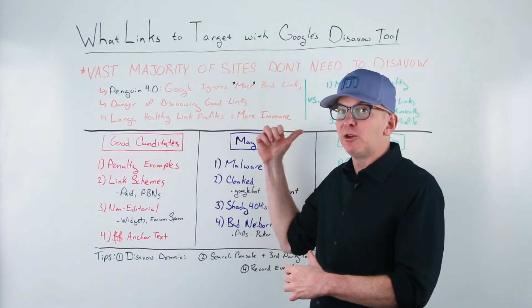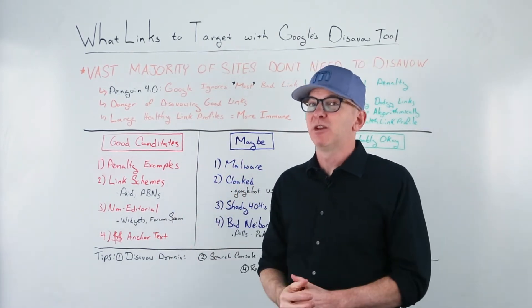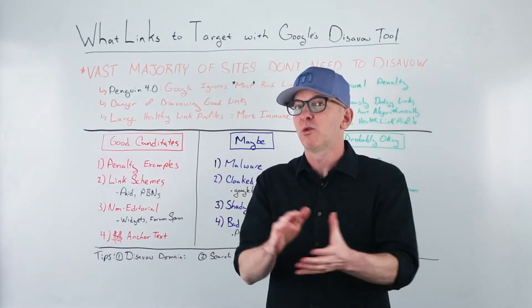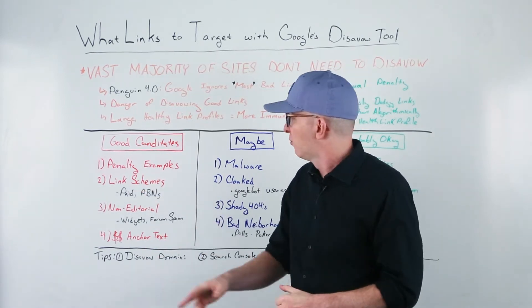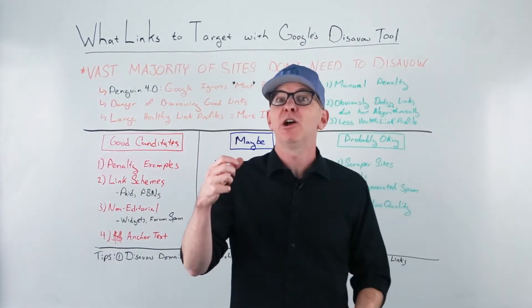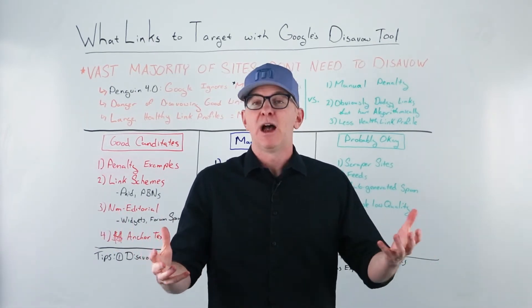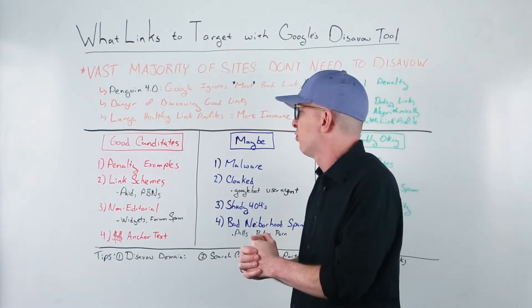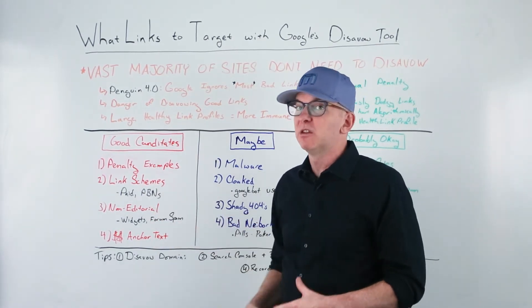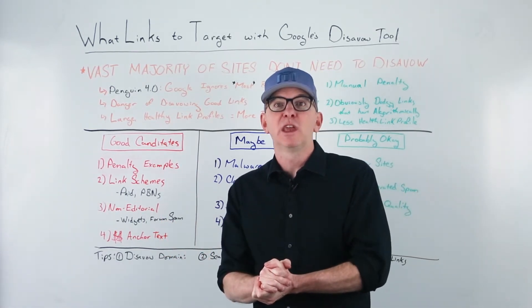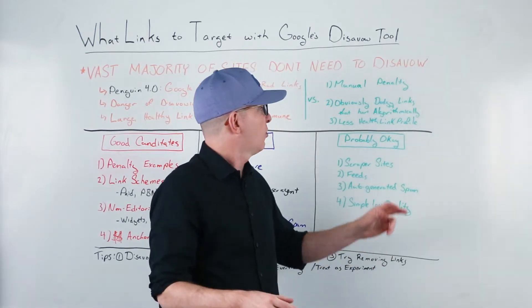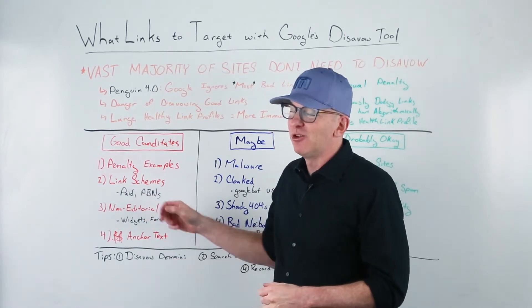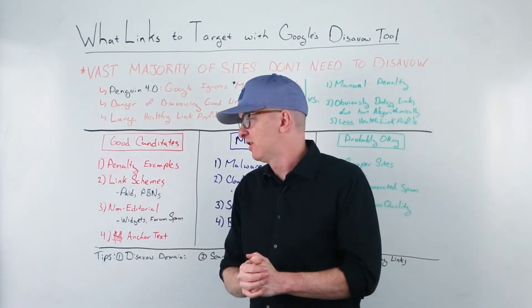If you've suffered a drop in traffic or you think Google is hurting you algorithmically because of your links, and you participated in link schemes — violated Google's webmaster guidelines — you definitely want to look at those. We're talking about links you paid for or someone else paid for. If you use PBNs and you've been hurt algorithmically, penalized, or your traffic is down, that's a good candidate for your disavow file.